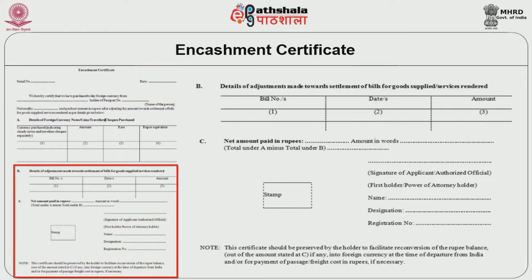Details of adjustments made towards settlement of bills for goods supplied and services rendered will encompass the bill number, date, and amount. The net amount paid in rupees will then be given, and the signature of the applicant will be obtained for authorization. This certificate should be preserved by the holder to facilitate re-conversion of the rupee balance into foreign currency at the time of departure from India, or for payment of passage costs in rupees if necessary.